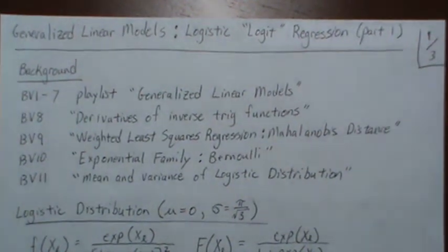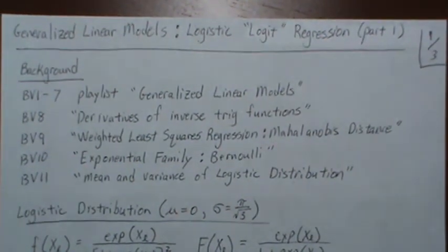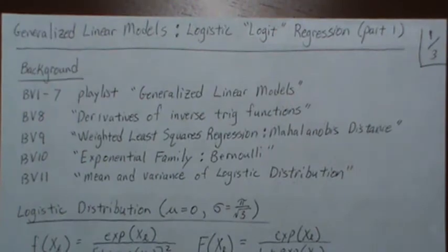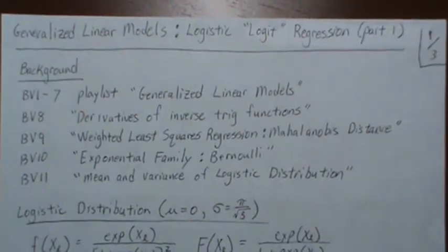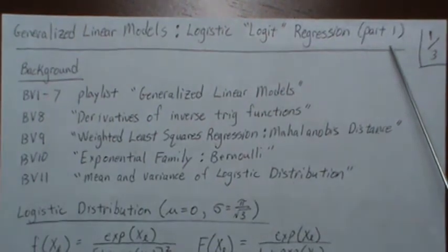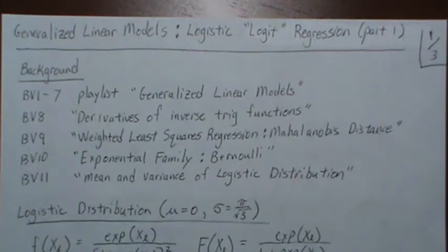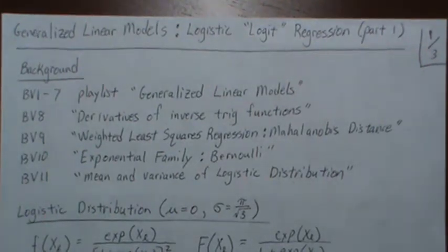Hello, this is the next video in my playlist called generalized linear models. Here we're going to look at logistic regression or logit regression, and it's part one. In part two we're going to illustrate this in R, specifically the iteratively reweighted least squares procedure from scratch, and then compare the result with the built-in function GLM. But this video is the theory behind why iteratively reweighted least squares works.